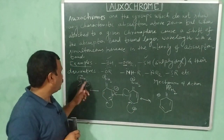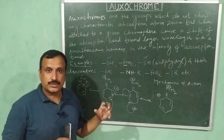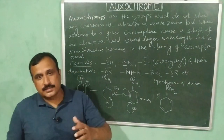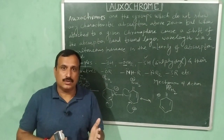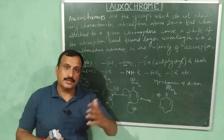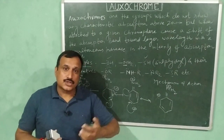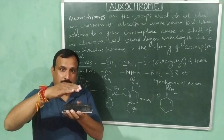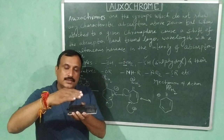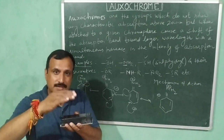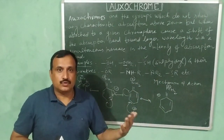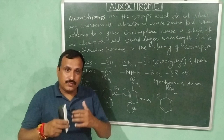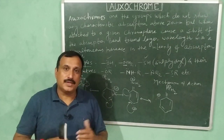This extended conjugation is basically responsible for the increase in the value of lambda maximum and the molar extinction coefficient. Extended conjugation decreases the energy gap between the ground state and the excited state. As explained in earlier videos, whenever the energy difference between the ground state and excited state decreases, it shifts the absorption maximum towards the longer wavelength side — that is, it increases lambda maximum and also increases the molar extinction coefficient. This effect of conjugation will be discussed in detail in the next video.